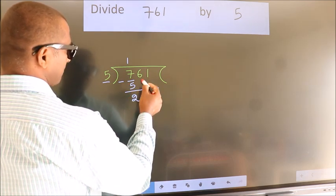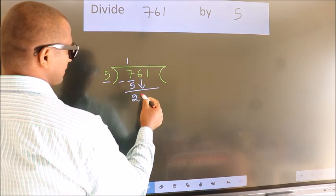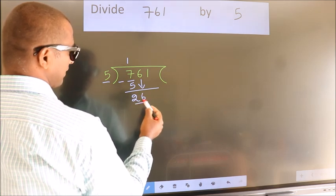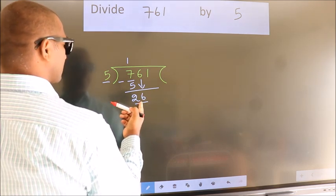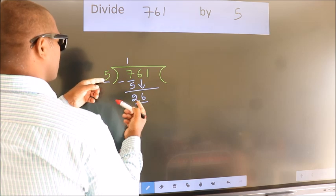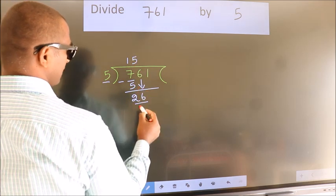After this, bring down the beside number. So 6 down, making 26. A number close to 26 in the 5 table is 5 fives 25.